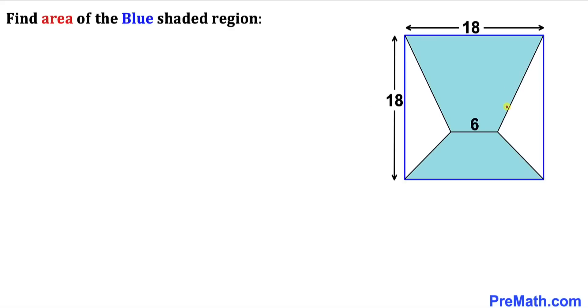Welcome to pre-math. In this video we have got this blue shaded region that has been inscribed in a square whose dimension is 18, and moreover this side length is 6 units. Now we are going to calculate the area of this blue shaded region.